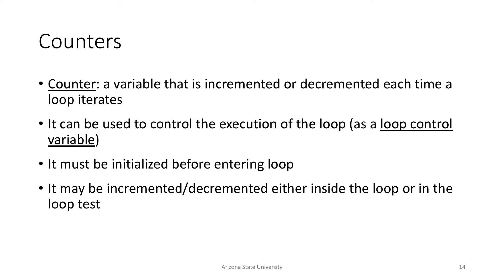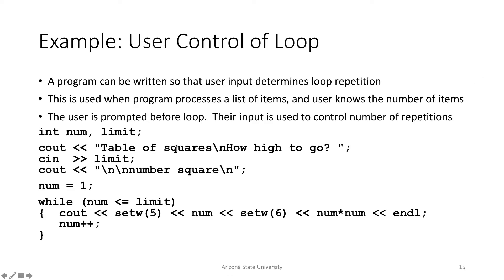Something we'll use many times with loops — especially for loops — is a counter. Sometimes you want to know what iteration you're on: are you on the first, the fifteenth, or the one millionth? In this example, we set a variable 'num' to one to represent the current iteration. At the bottom of the loop, 'num++' is done, so the second time through we're on the second iteration.